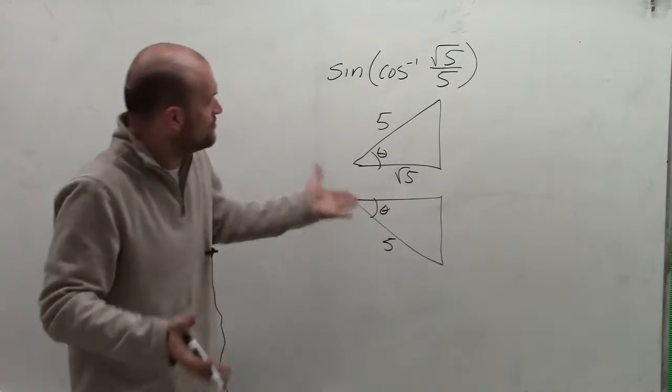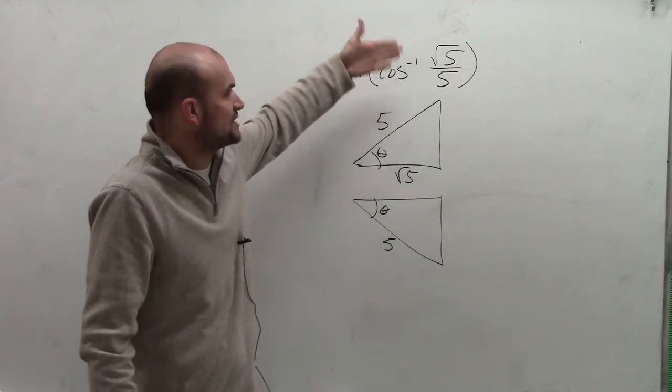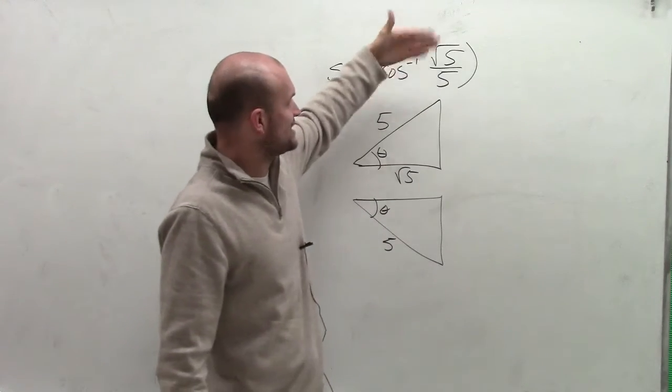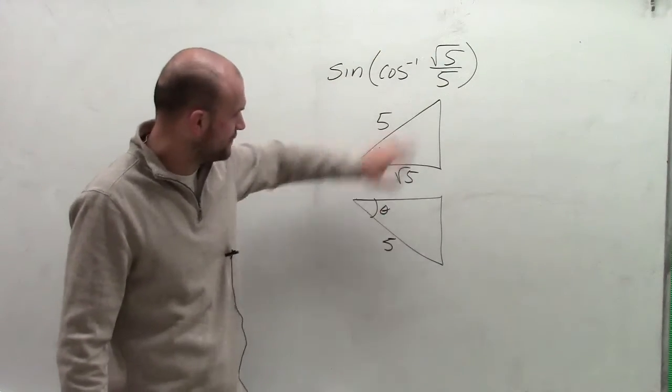So I could say these both could represent, because remember, the inverse cosine of square root of 5 over 5 means the cosine of what angle is going to equal my adjacent over my hypotenuse. So I have two different triangles.